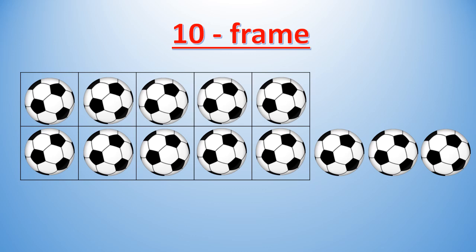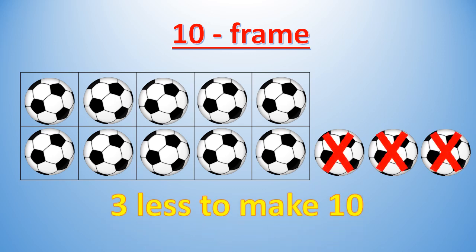See the next picture. How many balls in all? Very good, 13 balls. How many more or less are needed to make it as 10? Here some extra balls are outside the frame, so we should take away the extra balls. How many balls are outside? Very good, 3. So we can say 3 less to make 10.